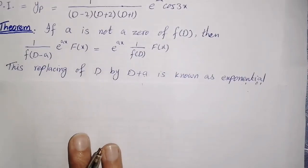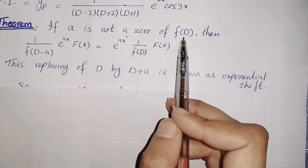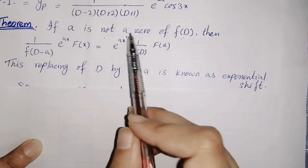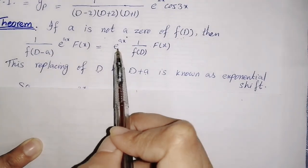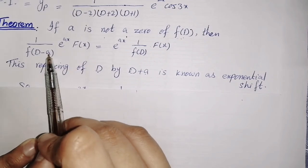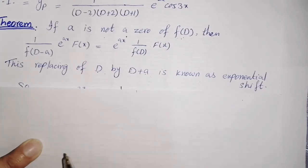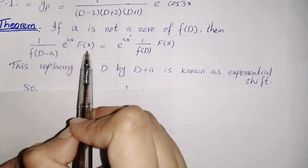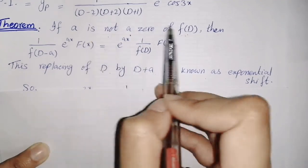Now we use the Exponential Shift theorem: if 'a' is not a root of f(D), then 1/f(D) · e^(ax) · f(x) can be written as e^(ax) · 1/f(D + a) · f(x). That is, we write the exponential term first, then replace D with D + a everywhere. This replacement of D by D + a is known as the Exponential Shift.